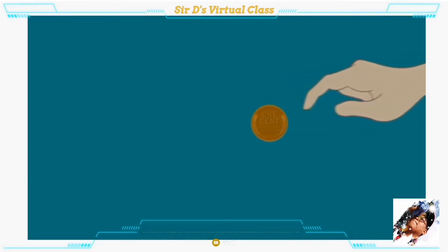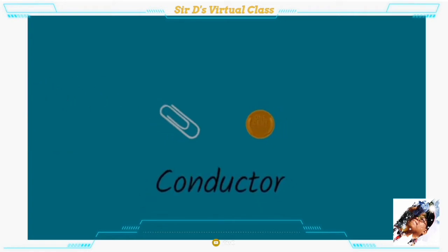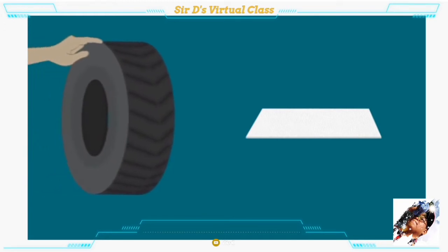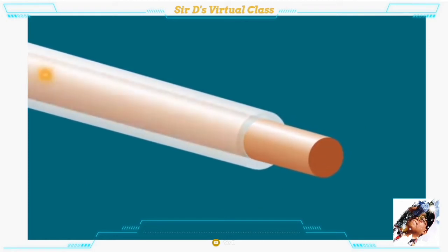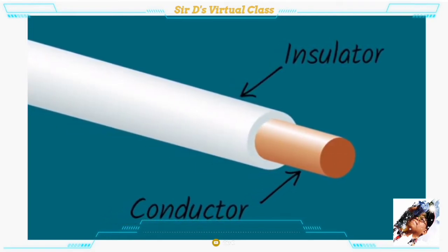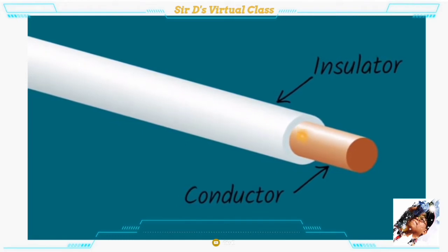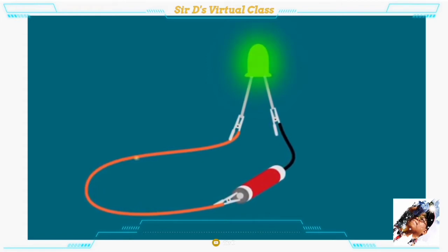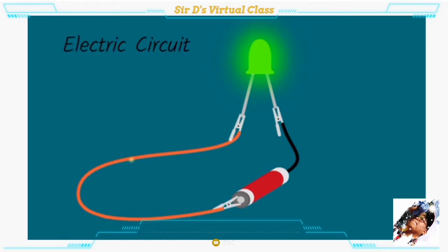Electrons can move in all materials, but they can move through some materials better than others. If electrons can move quickly and easily in a material, then that material is a conductor — anything that allows electric current to flow from one point to another. The opposite of a conductor is an insulator, a material that does not let electrons move well and doesn't conduct electricity. To use electric current to power things, you have to create a complete pathway for the electric current to follow. This is called an electric circuit — like a race track of conductive materials that lets electrons flow in a specific way.